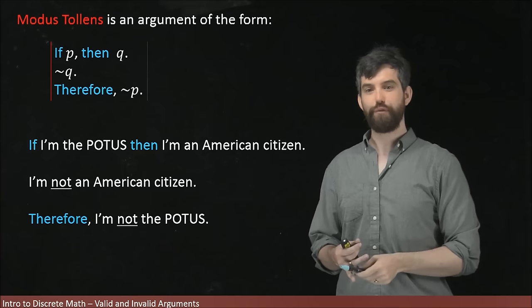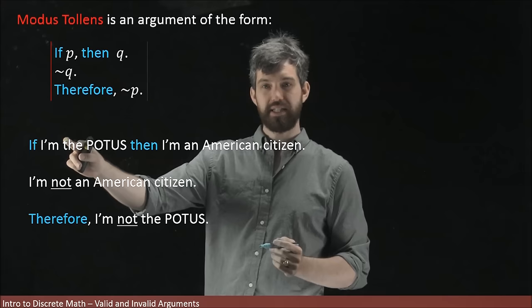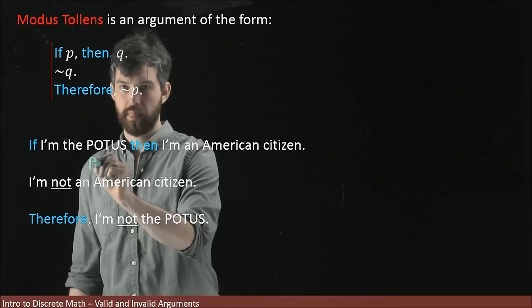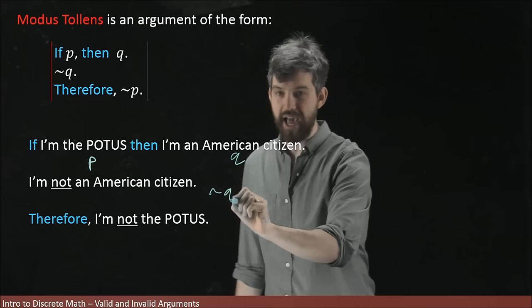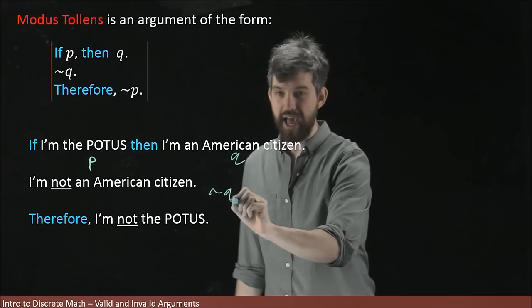And indeed if we come through and try to look at our structure here, I'm going to say that I am the President of the United States, that's going to be my P here. I am an American citizen, that's going to be the statement Q. And then what I'm doing down here is that I am negating this, I am saying I am not an American citizen, and therefore I am getting out of this not being the President of the United States.